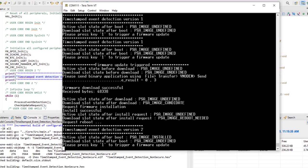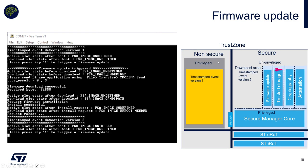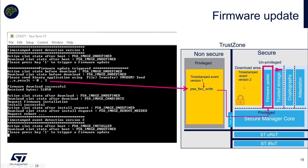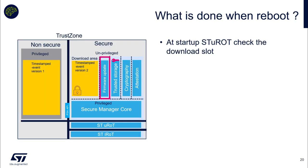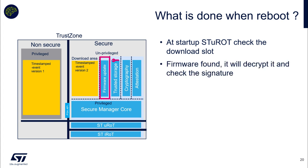Let's check exactly what happened inside our application. We have version 1 installed, and here are the different traces observed. When we finish receiving the packets, we call PSA firmware write. The timestamp event version 2 is written in the downloading area, still encrypted with signatures. Then we request a firmware installation — meaning we have finished downloading this version — and you can see the downloading slot changed from image undefined to image candidate. This is just the status of the slot. The next step is to trigger a reboot.